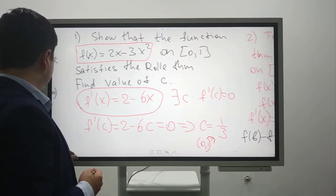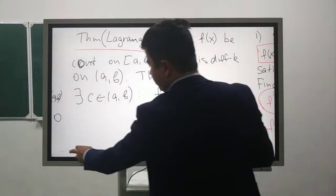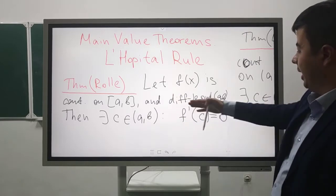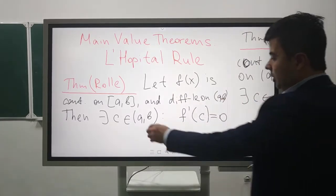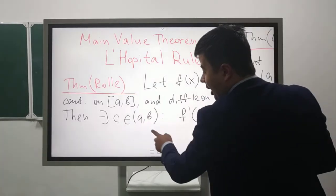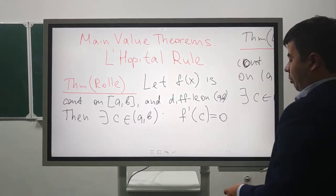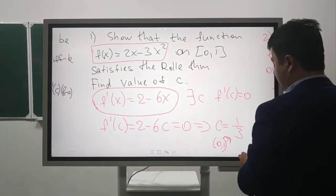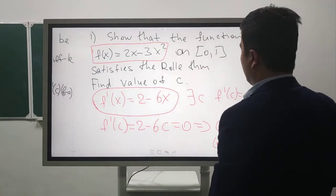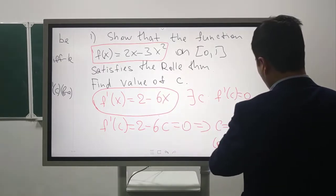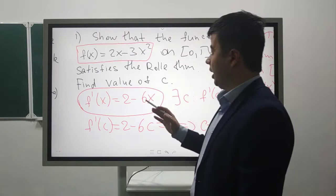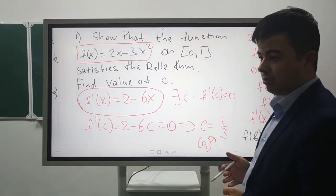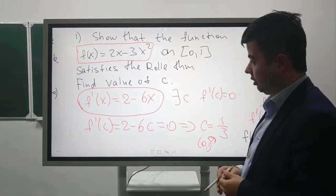In Rolle's theorem, the main conditions are that f(x) is continuous on [a, b] and differentiable on the open interval (a, b). Then there exists c from (a, b) such that f'(c) = 0. Now let's use this theorem. Since we need to show it is satisfied, if the function is continuous and differentiable, we can find the derivative.